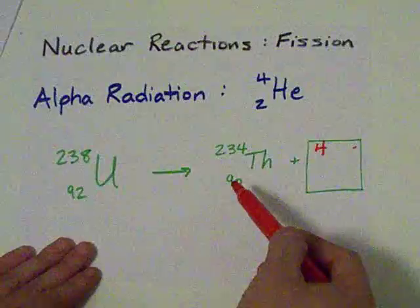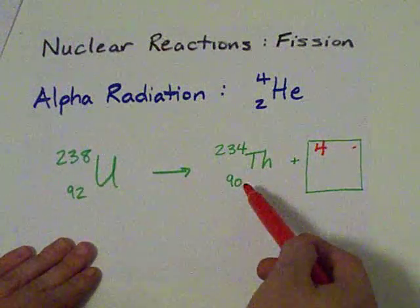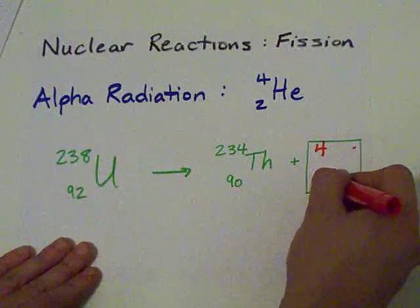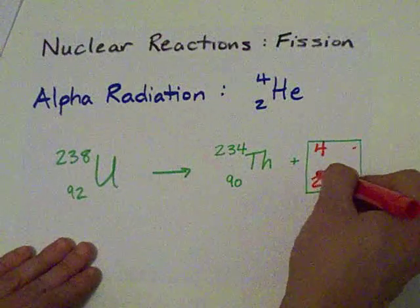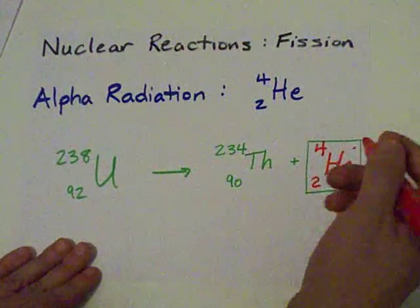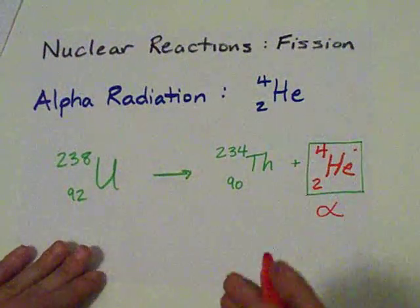You're a genius for figuring that one out. Anyways, 92 protons on this side. 90 left in thorium. Where'd the other two go? I don't know. Actually, I do know. Two protons and two neutrons were ejected as a helium nucleus, and that was called an alpha particle.